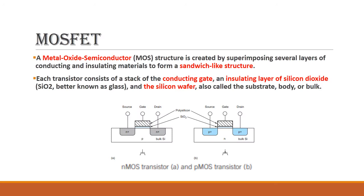MOSFET stands for Metal Oxide Semiconductor Field Effect Transistor. The MOSFET structure is a sandwich-like structure: starting with the gate, then an insulating layer of silicon dioxide, then a silicon wafer. It has three terminals: source, drain, and gate.